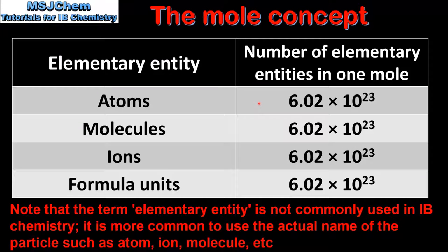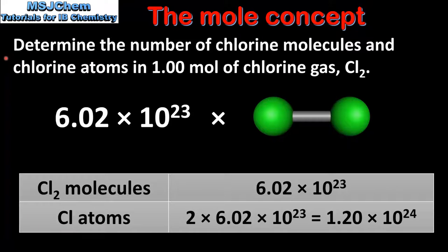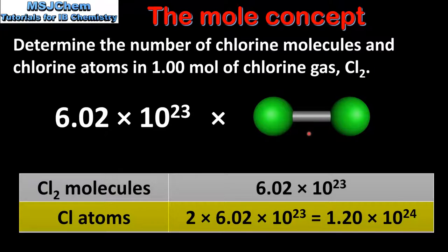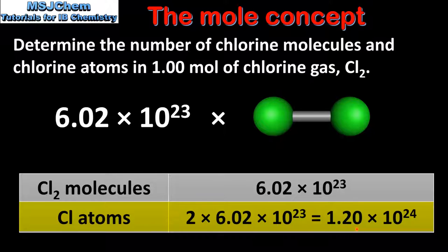So next we'll look at some examples. In our first example we'll determine the number of chlorine molecules and chlorine atoms in one mole of chlorine gas. Chlorine is a diatomic molecule with the formula Cl2. One molecule of chlorine gas consists of two chlorine atoms bonded together by a single covalent bond. So in one mole of chlorine gas we have 6.02 x 10 to the 23 molecules of chlorine. In terms of chlorine atoms we have 2 times the Avogadro constant, which gives 1.20 x 10 to the 24 chlorine atoms.